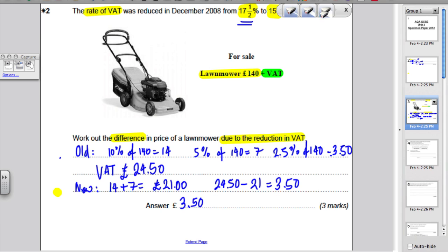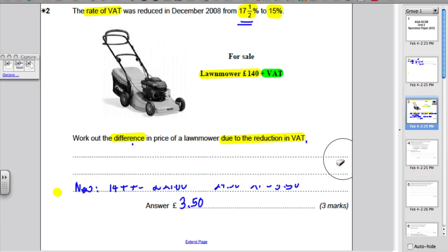Okay. I'm just going to rub this out and show you a quicker method here. That method is reasonable, but there is a quicker method. Given that the VAT has reduced from 17.5% to 15%, overall, there's been a reduction of 2.5%.